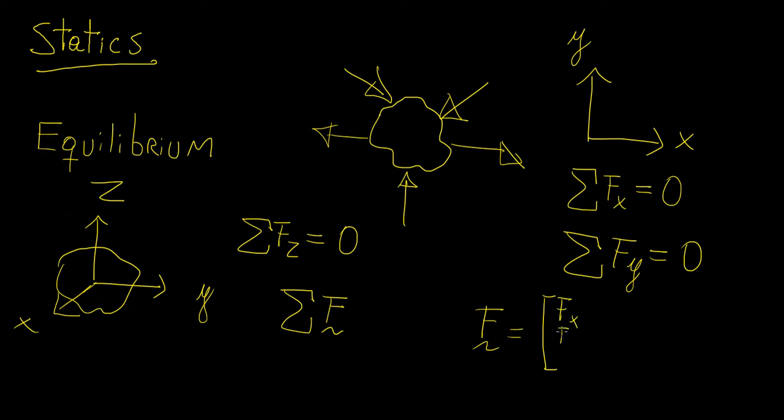Alternatively, we can write it using the angle bracket notation, so we have f in the x direction, f in the y direction, and then f in the z direction. And then we can also have this in terms of the components, so fx i hat, plus fy j hat, plus fz k hat.